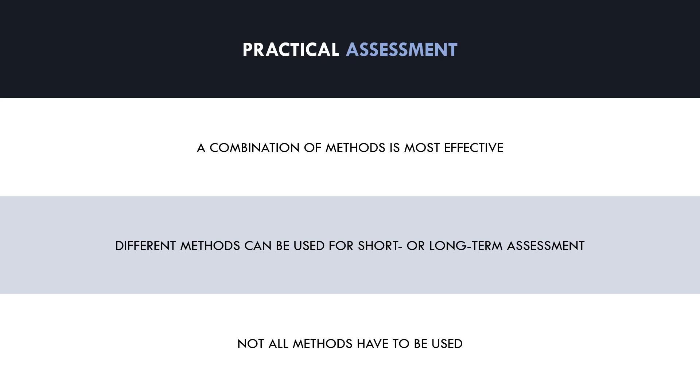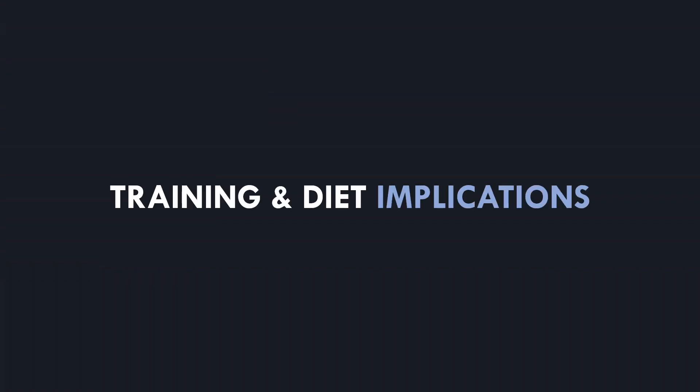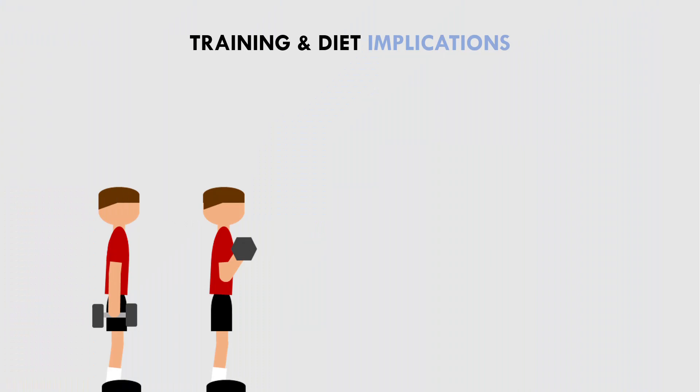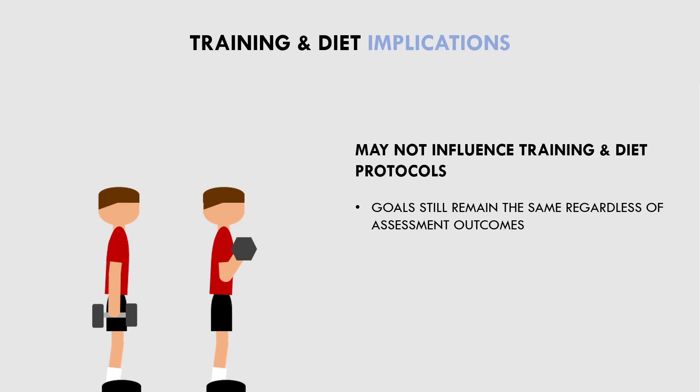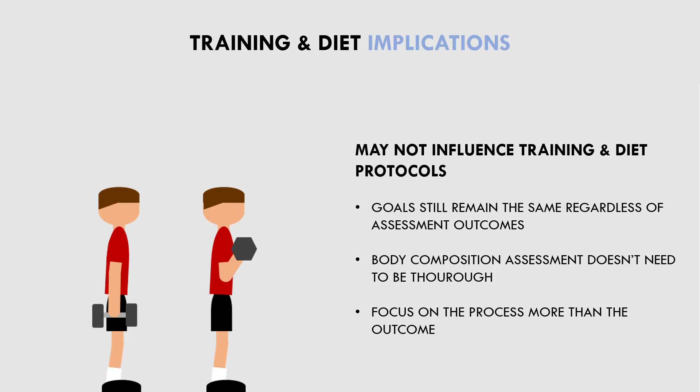This now leads us onto the practical side of things — what implication does this have for training and diet protocols? Well, the reality is that our body composition assessments probably won't change much from a practical perspective. It may give us a gauge of what is more or less effective, but ultimately our goals are still the same: trainees will still want to increase muscle size and reduce body fat from a long-term perspective. Therefore, regardless of what our assessment tells us, we will still use resistance training with the goal of maximising muscle growth, and nutrition as a way to assist this and to reduce body fat when desired. So really, is there any point in assessing body composition at all? Well, there is, but we don't need to be extremely thorough and accurate because our goals are ultimately still the same. We may adjust our training volume or exercise selection, or increase or decrease calorie intake, but ultimately the primary principles remain the same. Therefore, trainees should probably focus on the process of training and nutrition and less on the outcome.